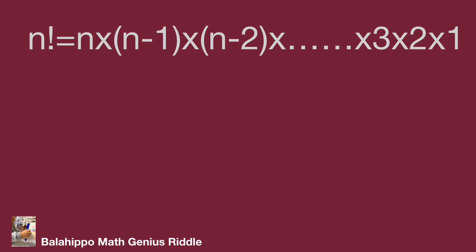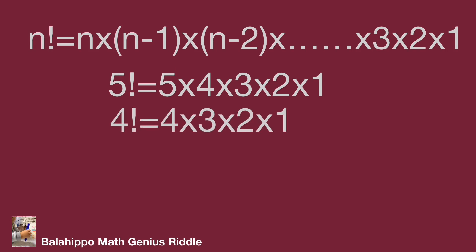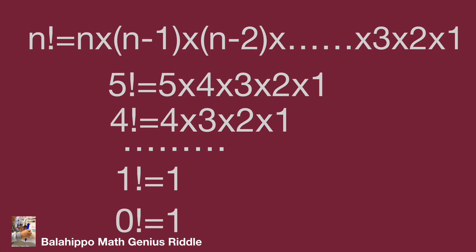For example, 5 factorial equals 5 times 4, where 4 equals 5 minus 1, times 3, where 3 equals 4 minus 1, times 2 times 1. Also, 4 factorial equals 4 times 3 times 2 times 1. And 1 factorial equals 1, and by definition, 0 factorial equals 1.